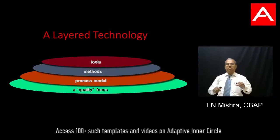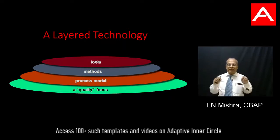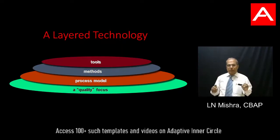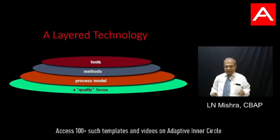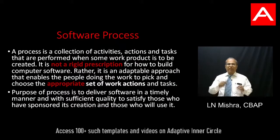Typical software methodologies contain four things. First is a quality focus, which means we want to build great software. Second, we create something called a process model, which means we understand how we are going to build great software. Third, we create methods, which are very detailed instructions on how to write the right code, how to write a requirements document, how to write a test case. And of course, we use tools, because tools can help us do a lot of things.